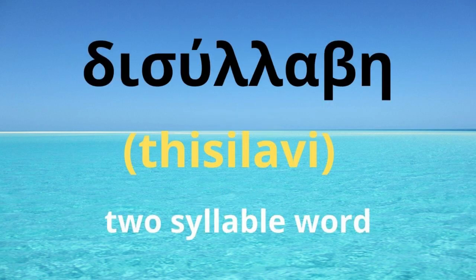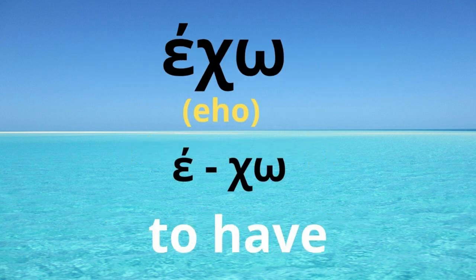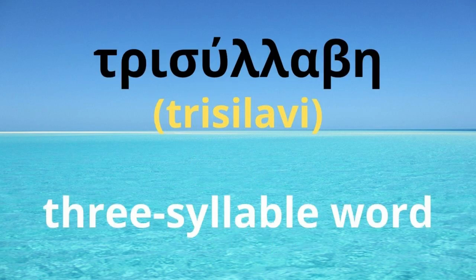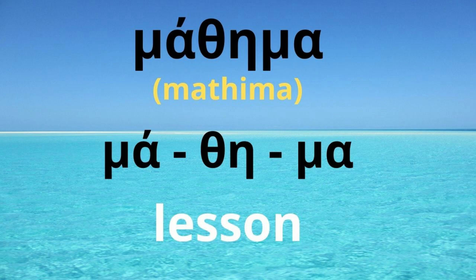We also call DISYLABY a word that has two syllables. Take, for example, the verb ECHO — E-CHO — there are two syllables. TRISYLABY is a word with three syllables. Let's see the word MÁTHYMA — MA-THY-MA.